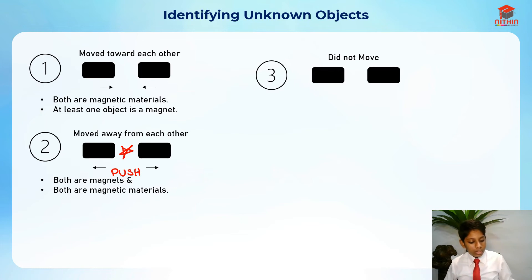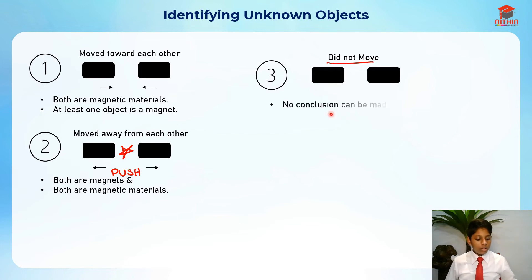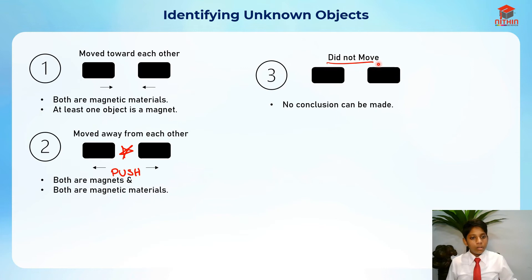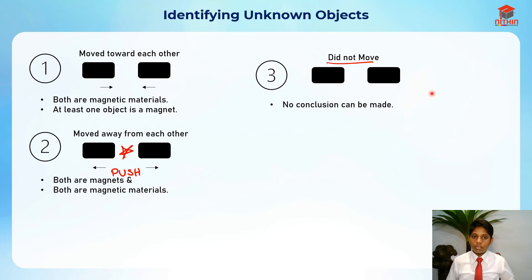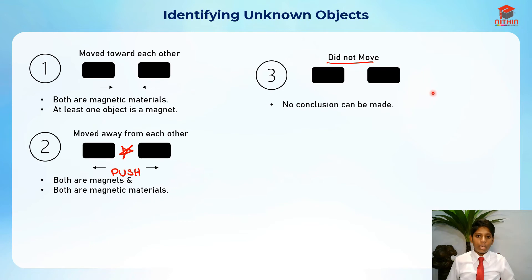For scenario three: the objects did not move. No conclusion can be made, because we don't know whether it's not a magnet but still a magnetic material, or whether both of them are non-magnetic materials. There are too many complications, so no conclusion can be made at this point.